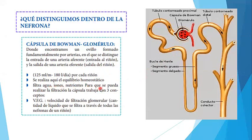El glomérulo filtra 125 mililitros por minuto y durante el día filtra 180 litros por cada riñón. Aquí se realiza el equilibrio homeostático. Recordemos que la homeostasis es el mantenimiento del equilibrio interno. En esta zona se va a mantener el equilibrio homeostático. Filtra agua, iones y nutrientes.